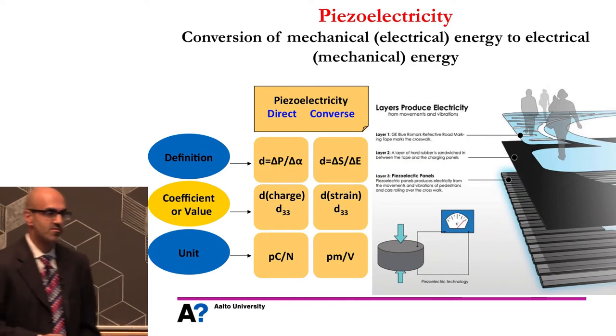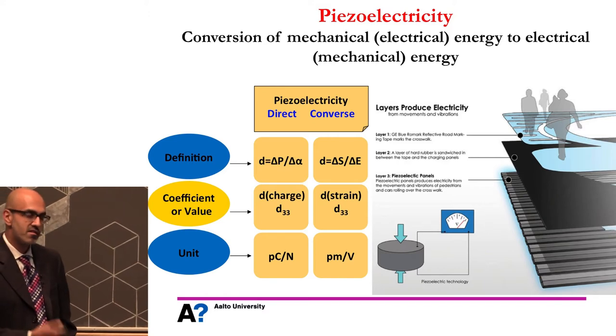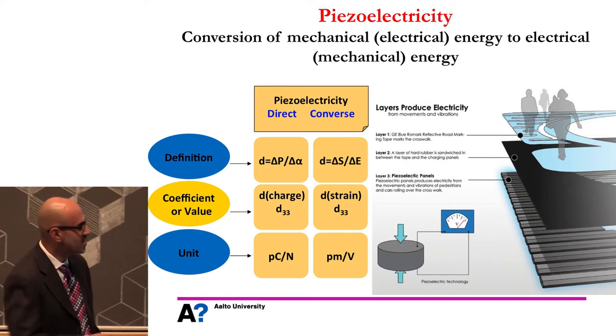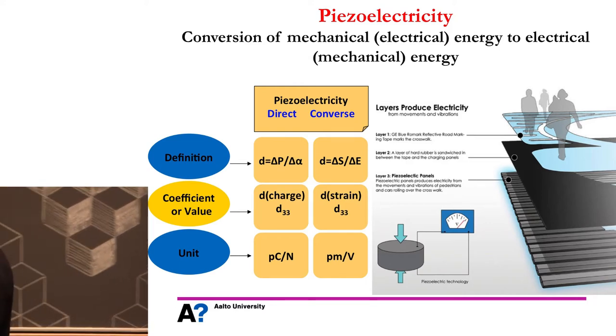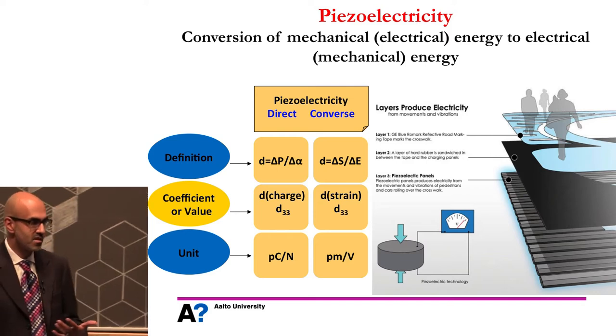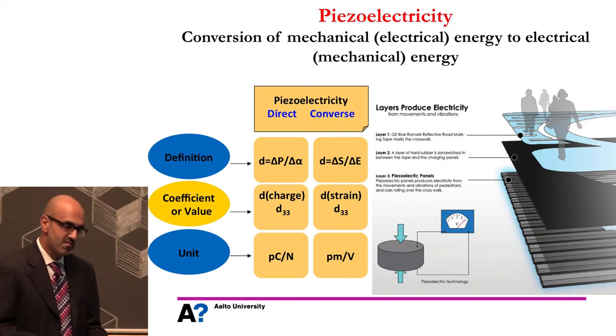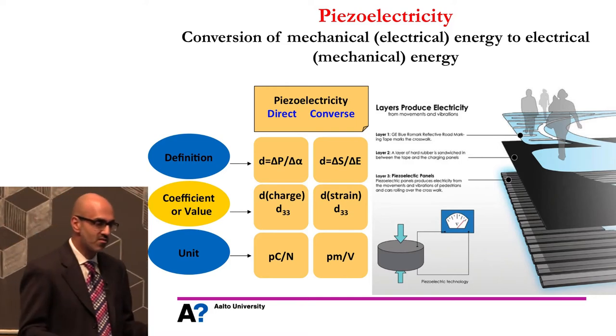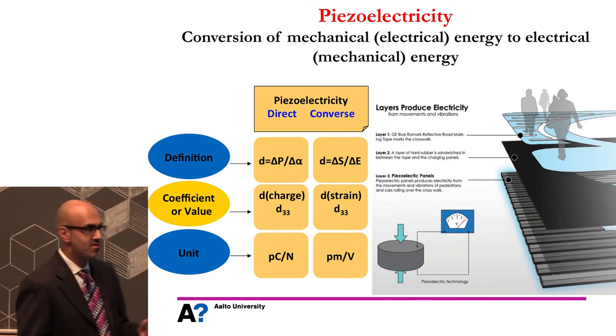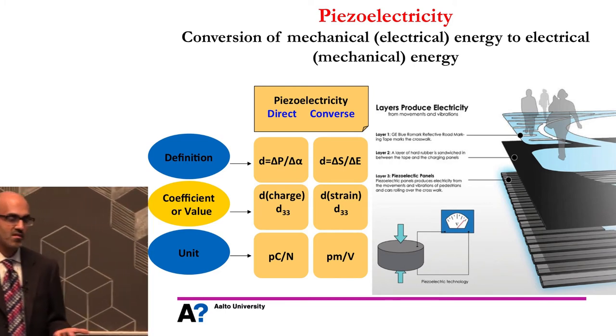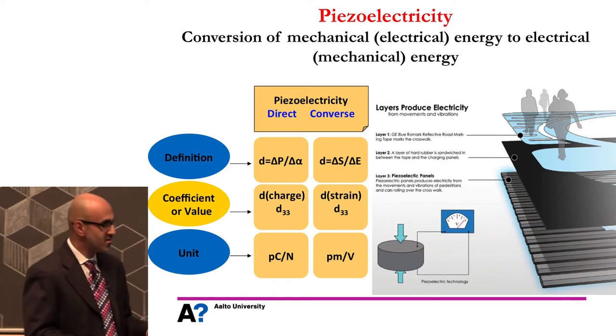For piezoelectricity — conversion of mechanical to electrical energy — you can imagine a prototype where people walking on a crosswalk create mechanical energy. The piezoelectric material, which is something that we try to make, converts that to electricity which can then power a street light or a stoplight. Just the normal mechanical energy that occurs in everyday life is transformed via piezoelectrics. The question is: what material do you use to make these panels? Is it environmentally safe? Is it cheap? That's what we're interested in — making these new materials.